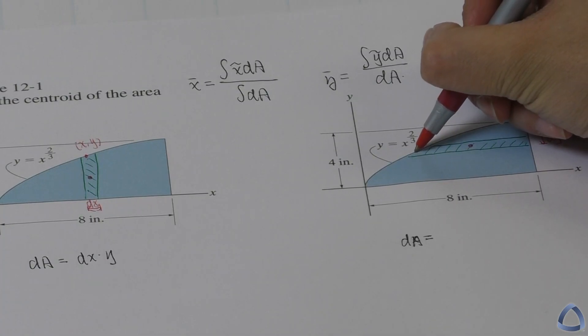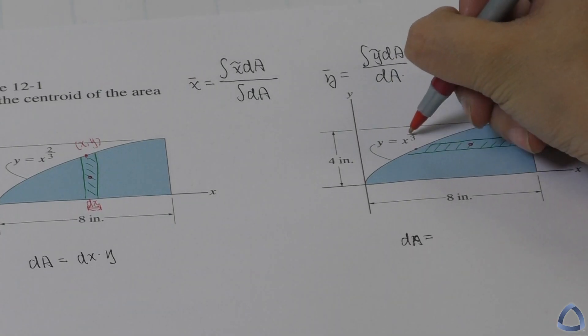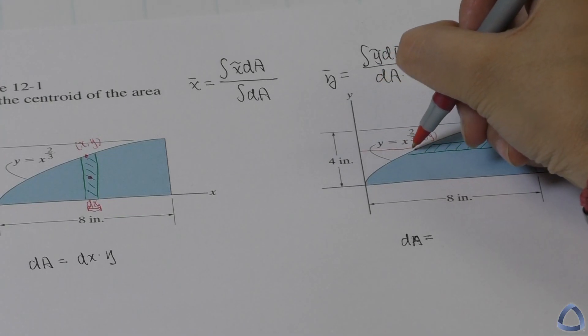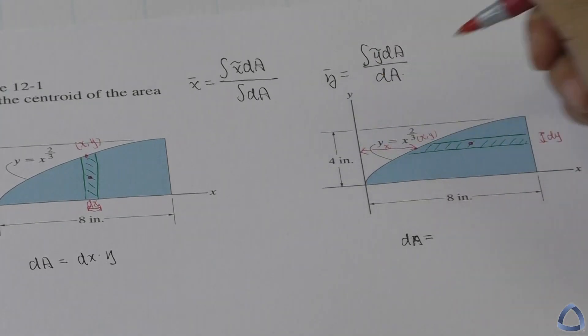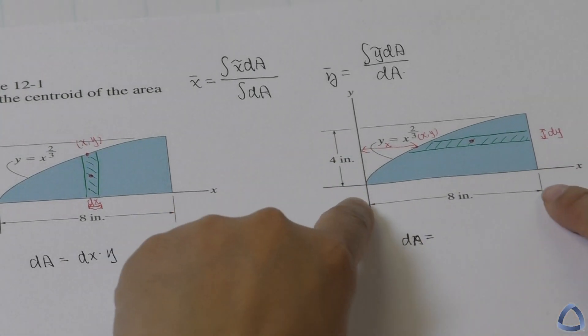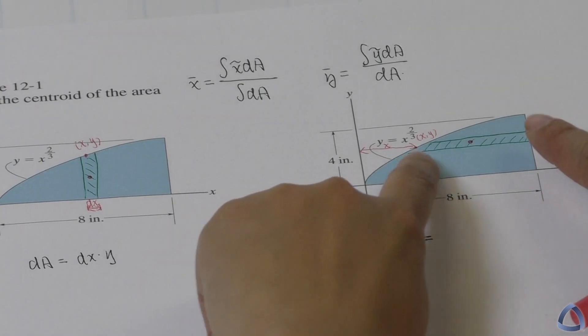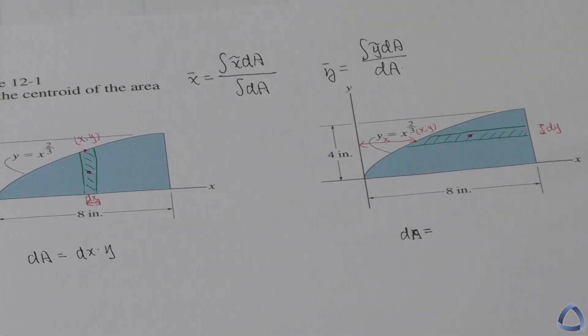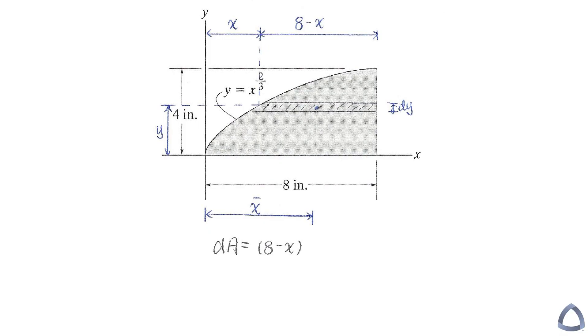You can see this point is x and y, which means from the y axis to this point will be x. However, this is not the base of the little rectangular. Based on the geometry, we can see the base of the little rectangular you just draw will be 8 minus x, and then we multiply the height. We can keep going, try to find out the x tilde, y tilde for each little rectangle.